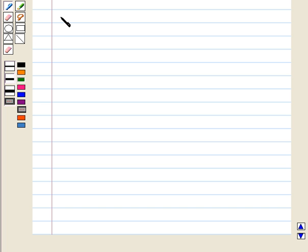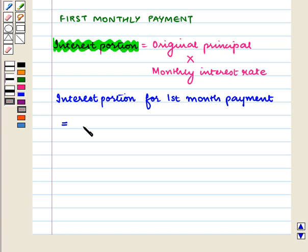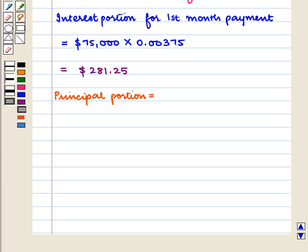Now we calculate the interest portion, principal portion, and the loan balance for the first monthly payment. The interest portion for the first month payment is equal to the original principal multiplied by the monthly interest rate. So the interest portion for the first month is equal to $75,000 into 0.00375, which is equal to $281.25.